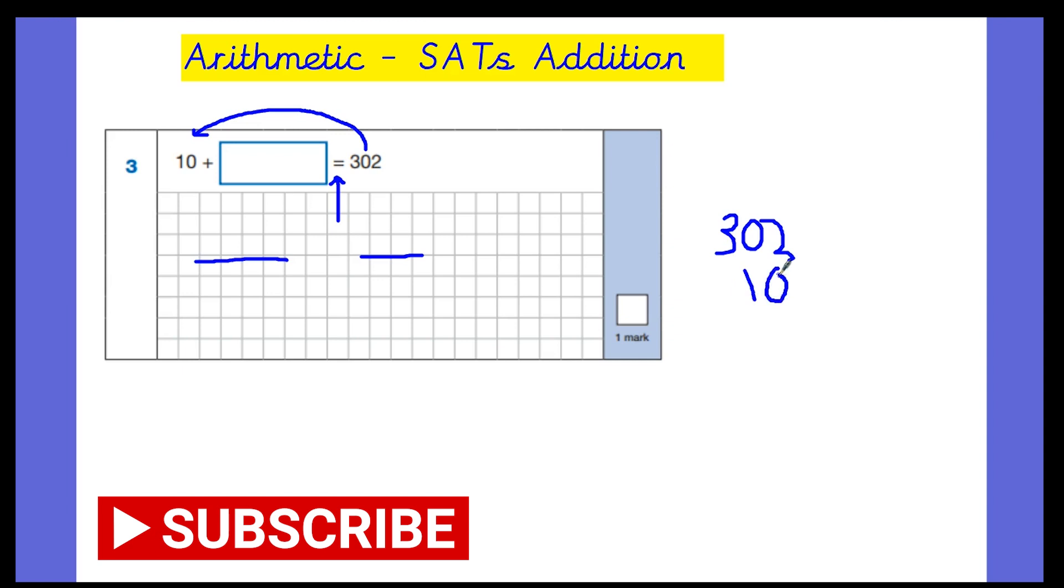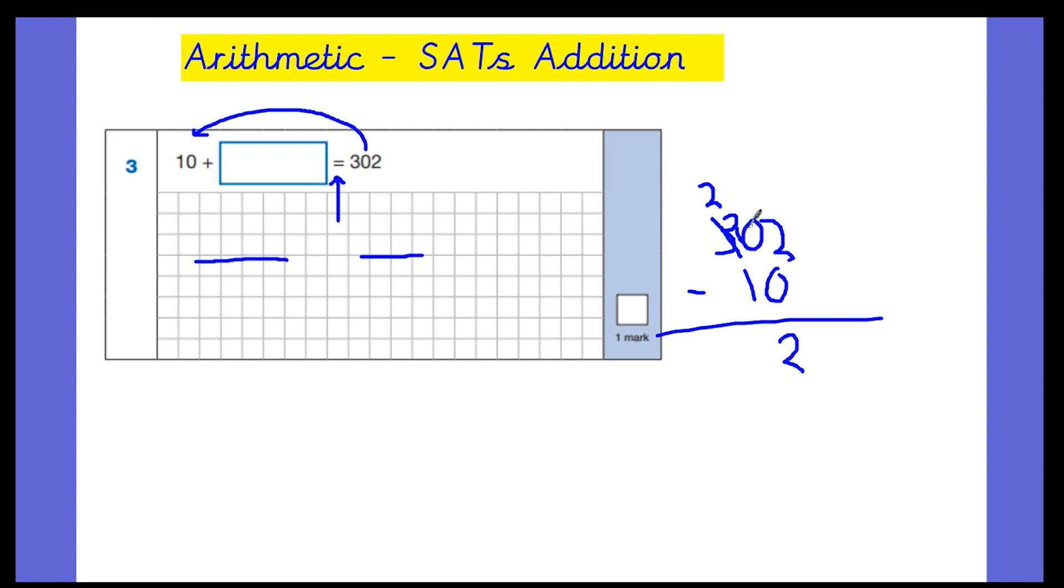So 302 take away 10. 2 take away 0 is 2. 0 take away 1 we can't do so we must borrow. So that becomes 200, that becomes 10. 10 take away 1 is 9. And 2 take away 0 is 2, giving us a final answer of 292.